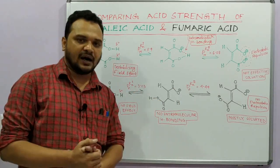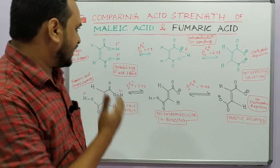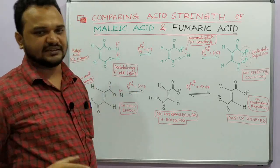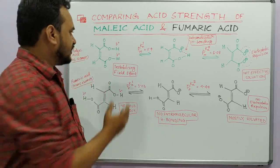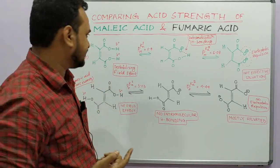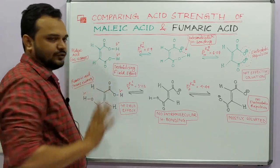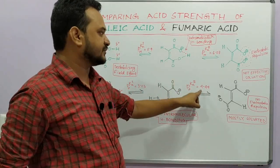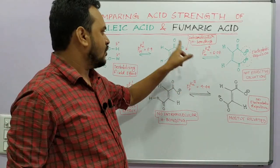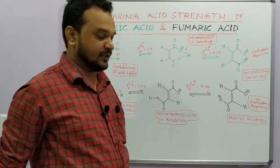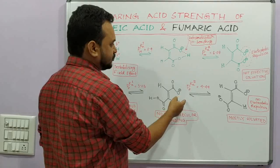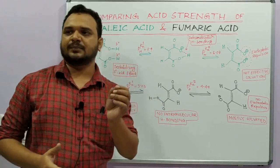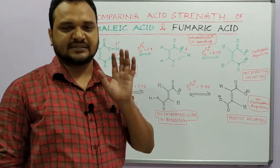Similarly, the first pKa value for fumaric acid is 3.03 and the second pKa value is 4.44. All four pKa values are experimentally obtained. For the first dissociation, the pKa of maleic acid is less than that of fumaric acid — and since a lower pKa means a stronger acid, maleic acid is stronger than fumaric acid for the first dissociation. But for the second dissociation, fumaric acid has the smaller pKa (4.44) compared to maleic acid (6.07), so fumaric acid is the stronger acid in the second dissociation.